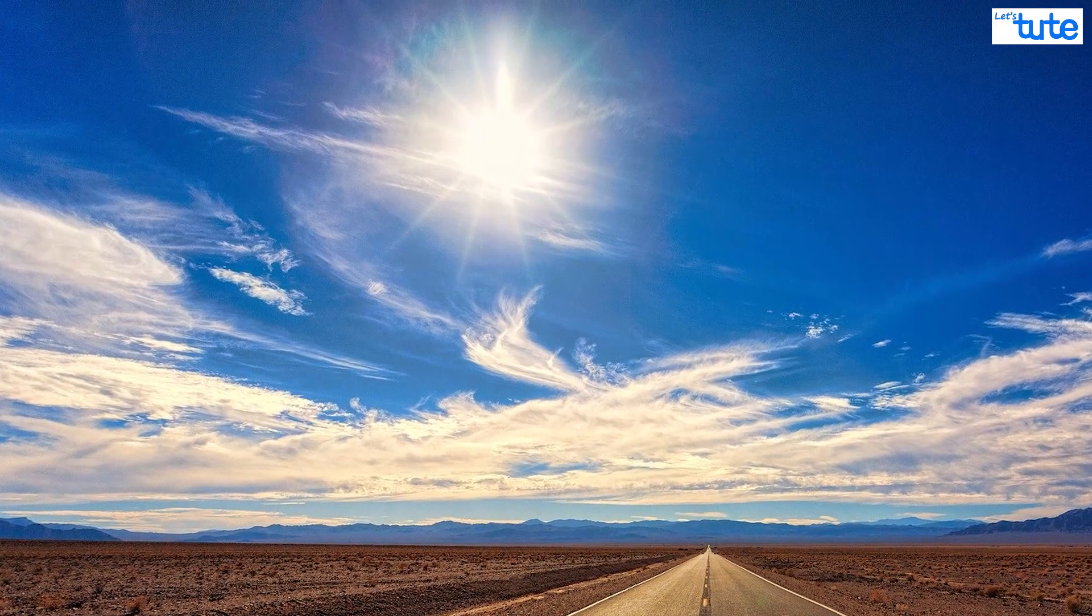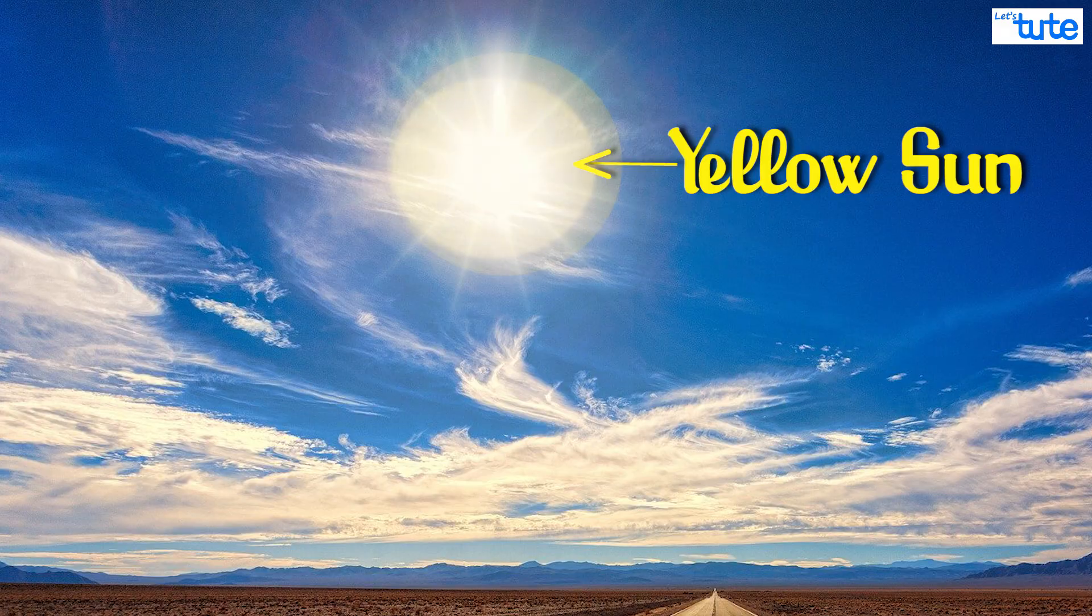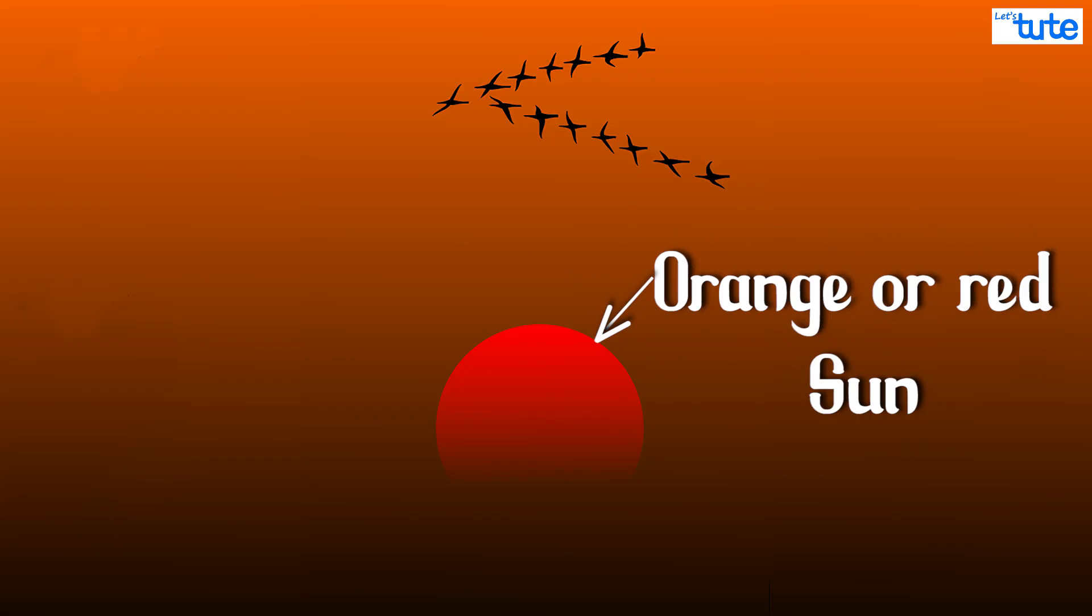Well firstly, we noticed that the sun only looks yellow during midday. It looks orange or red during sunrise or sunset.